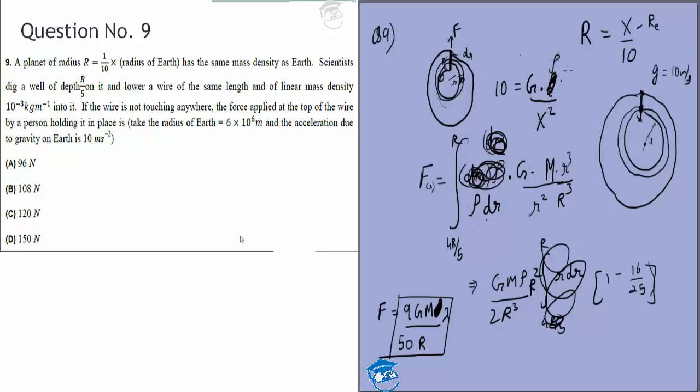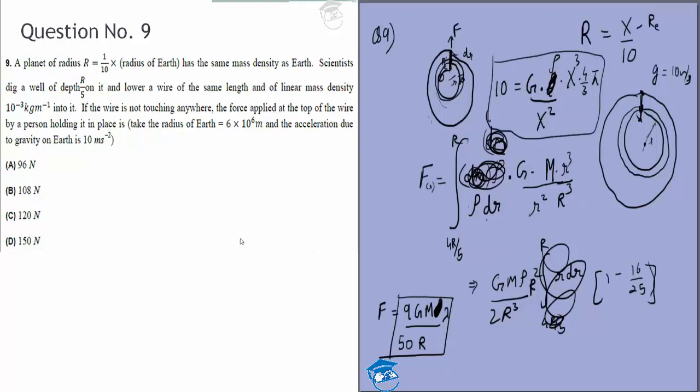So x squared times ρ times x cubed times 4π/3, this we know is 10. From that we can get the result: Gρx equals 30/4π.